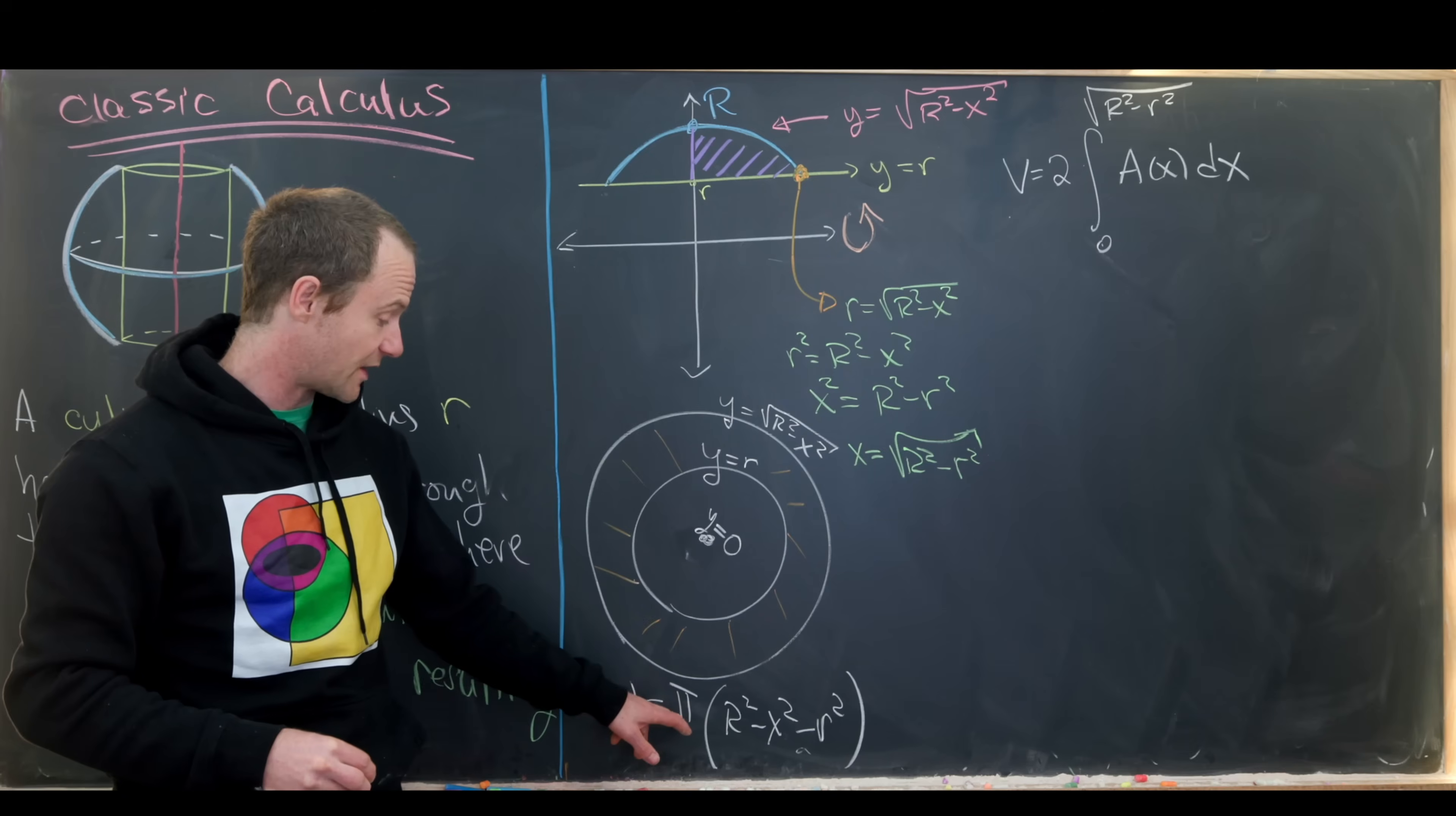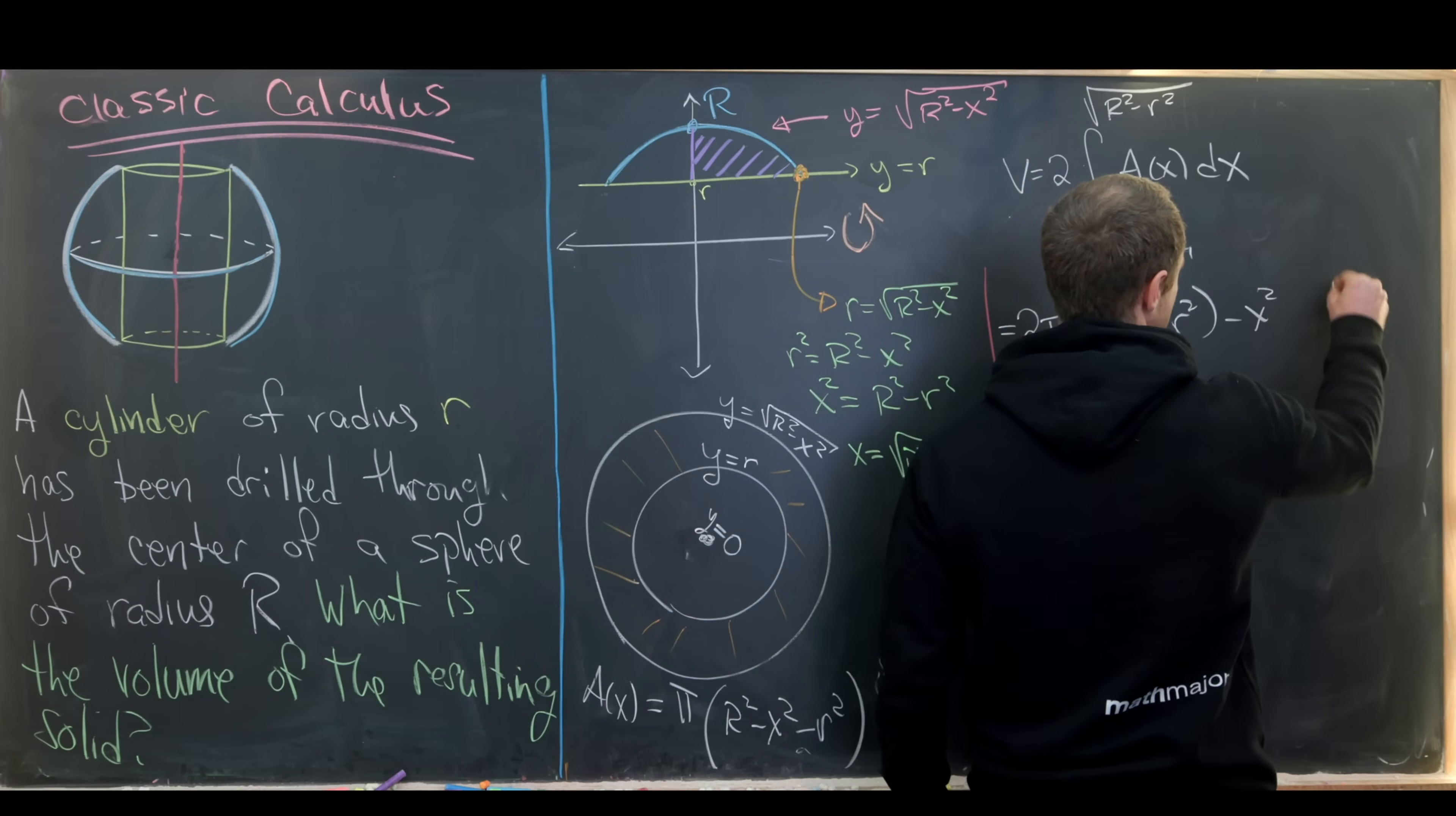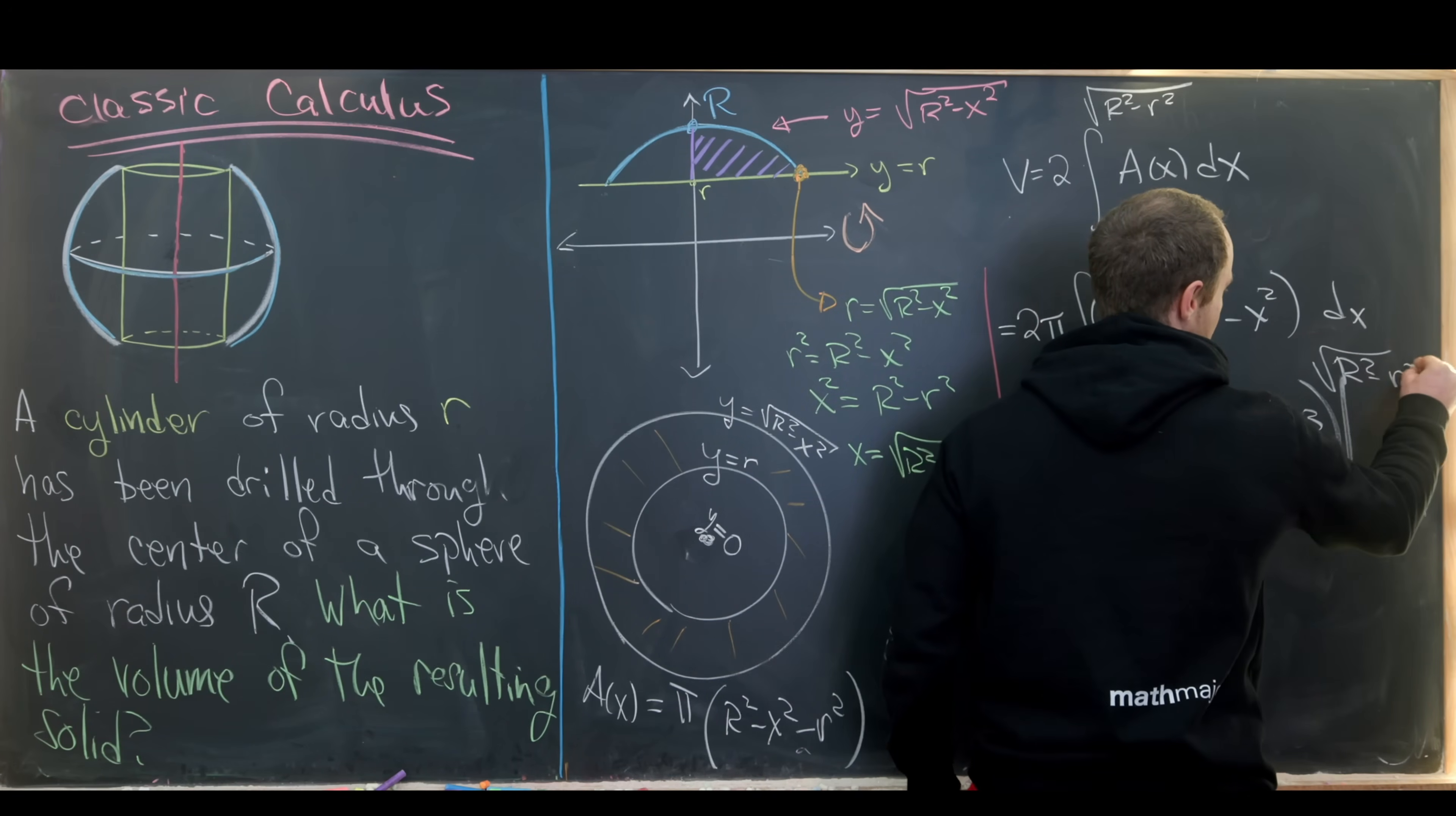Okay. So let's get to it. So this is going to be two times pi. And then I have my integral from zero to the square root of capital R squared minus little r squared of capital R squared minus little r squared and then minus x squared dx. So something that looks like that. But now let's take the antiderivative. So that'll give me two pi. Then I have R squared minus little r squared x minus one third x cubed. So using the fundamental theorem of calculus, that needs to be evaluated from zero to the square root of R squared minus r squared.